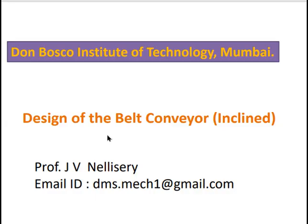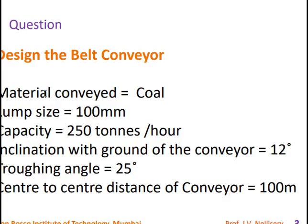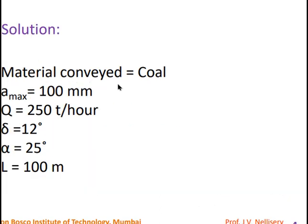Today we look into the design of an inclined belt conveyor. The question: design a belt conveyor where the material conveyed is coal, lump size is 100 mm, capacity is 250 tons per hour, inclination with the ground is 12 degrees, troughing angle is 25 degrees, and the center-to-center distance of the conveyor is 100 meters.